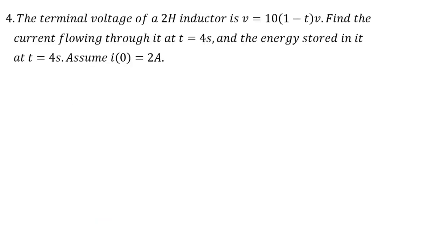Now for the last question: the terminal voltage of a 2 henry inductor is v(t) = 10(1 − t) volts. Find the current flowing through it at t equals 4 seconds and the energy stored at t equals 4 seconds. We assume the initial current i(0) equals 2 amperes.